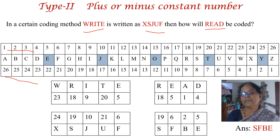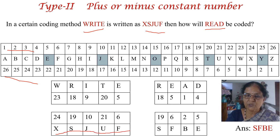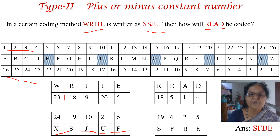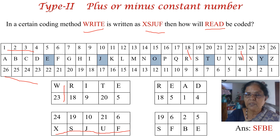Write the word W-R-I-T-E with each letter in a separate box, and below write X-S-J-U-F. Now copy the direct-order numbers for each letter: W is 23, R is 18, I is 9, T is 20, E is 5. Then write the numbers for the coded word: X is 24, S is 19, J is 10, U is 21, F is 6.